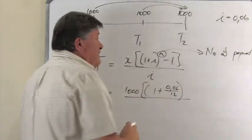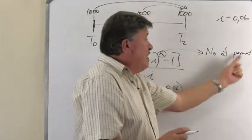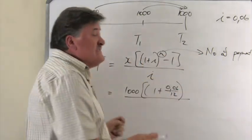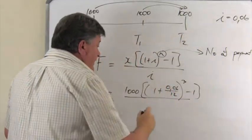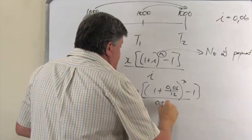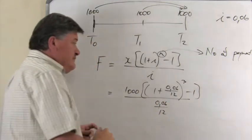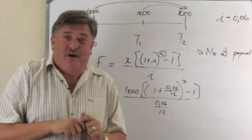To the exponent of, and what is that? Not the number of months, but the number of payments. How many payments? 1, 2, 3. 3 payments minus 1 over the I, which is 0.06 over 12. So that is what you need to do.